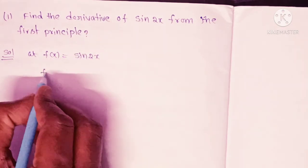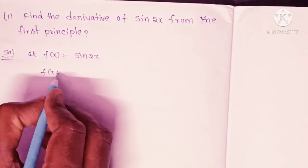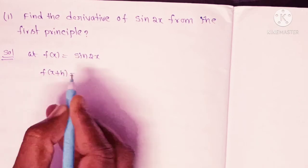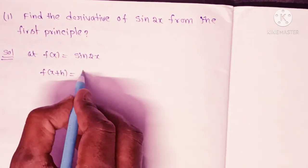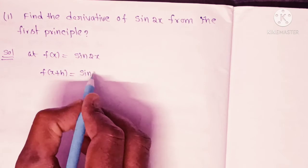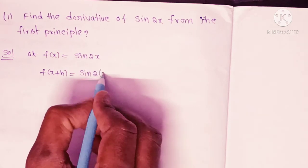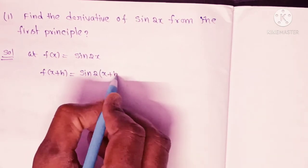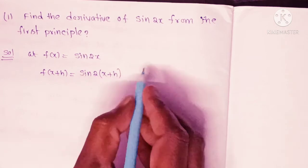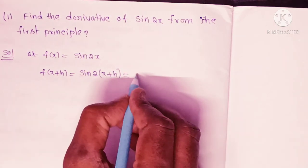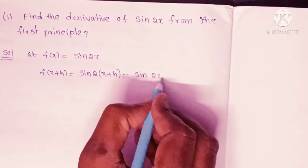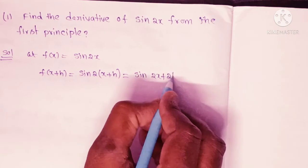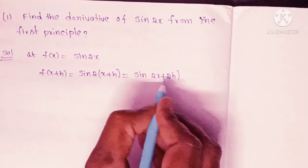So, f of x plus h: substituting x with x plus h, we get f of x plus h equal to sin of 2 into (x plus h), which gives sin(2x plus 2h).